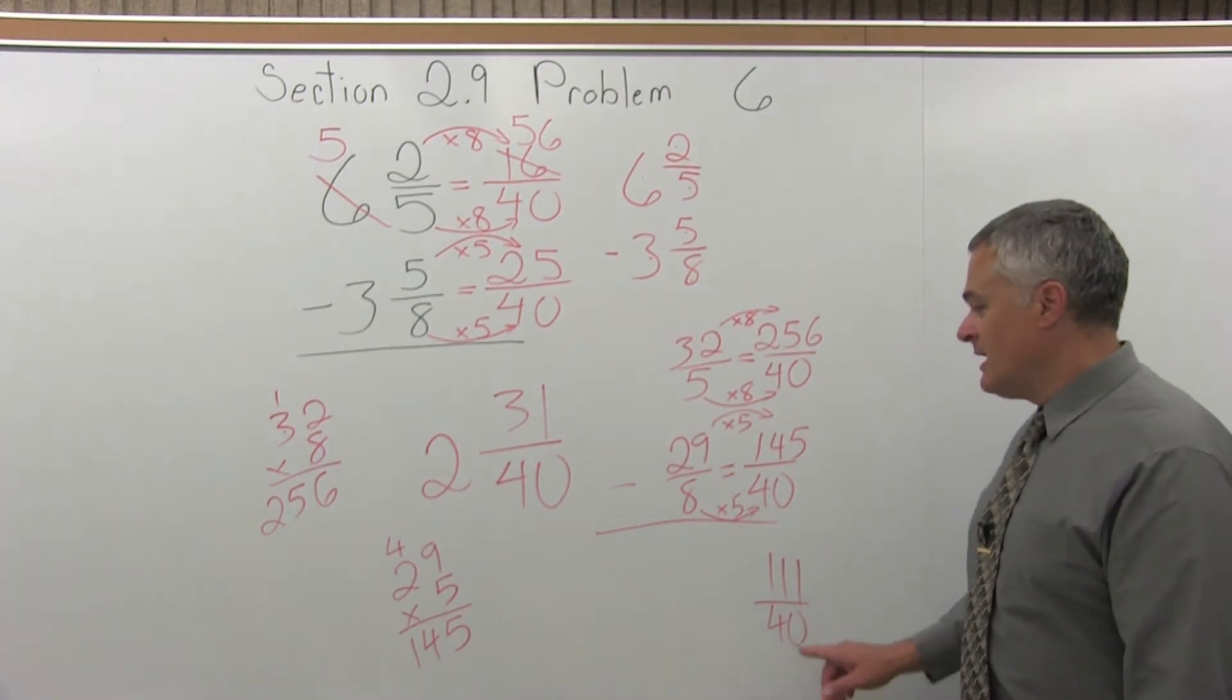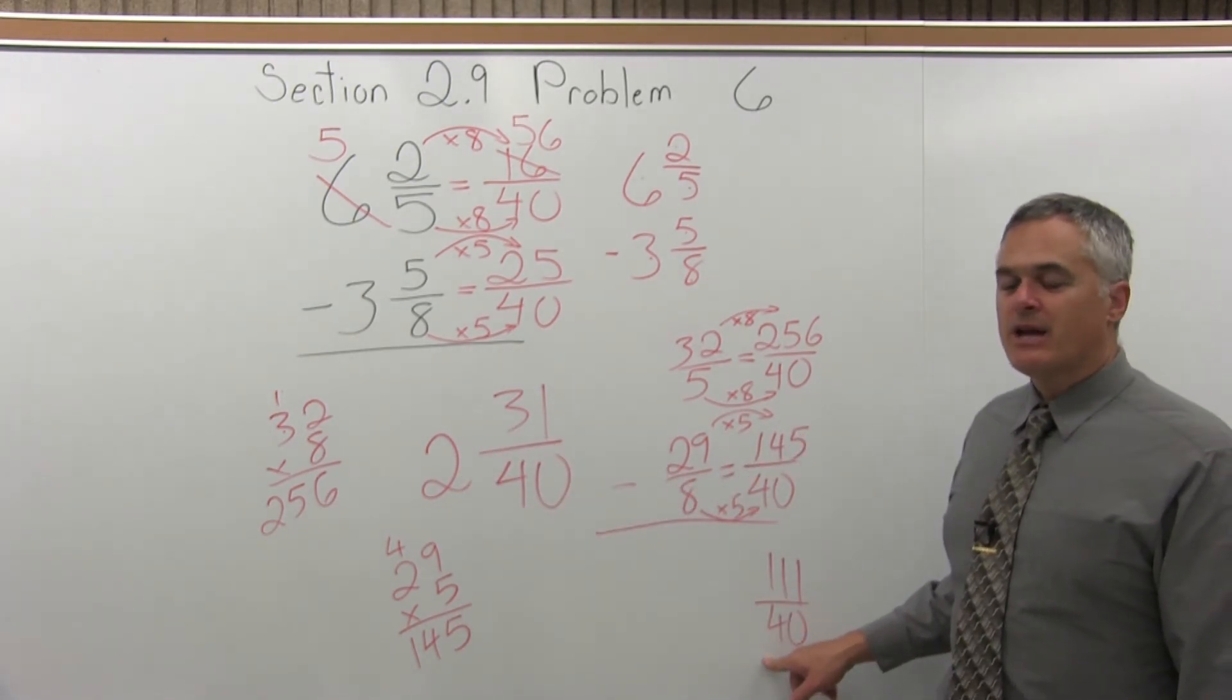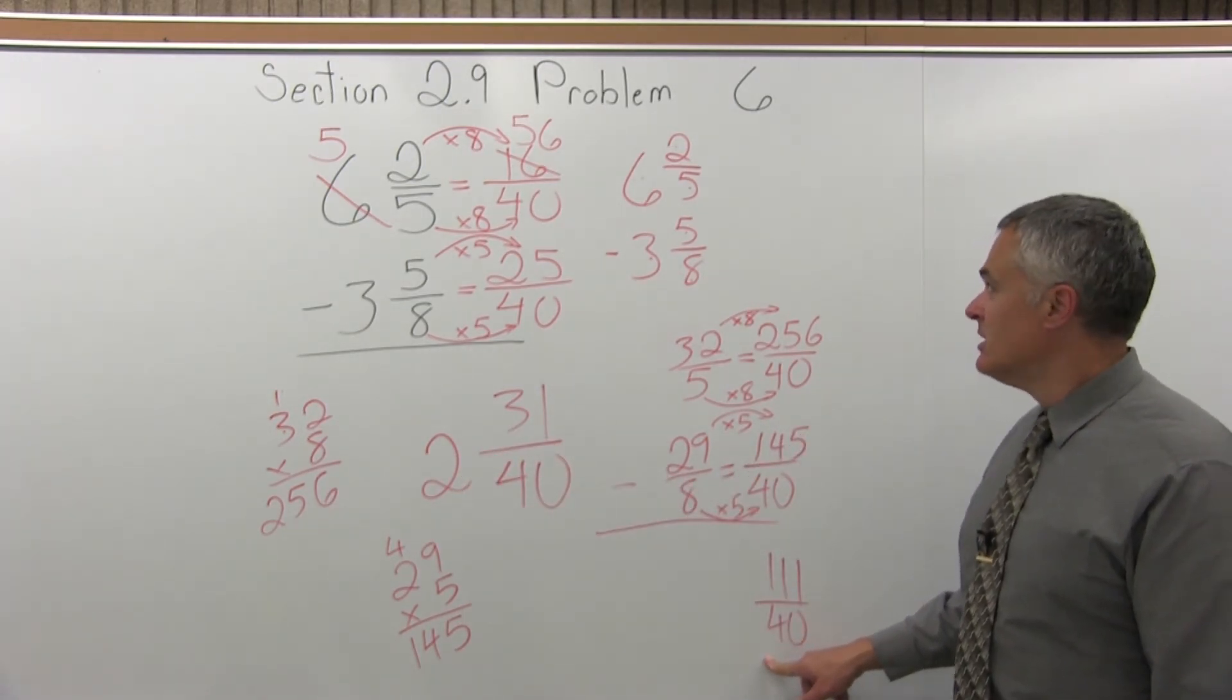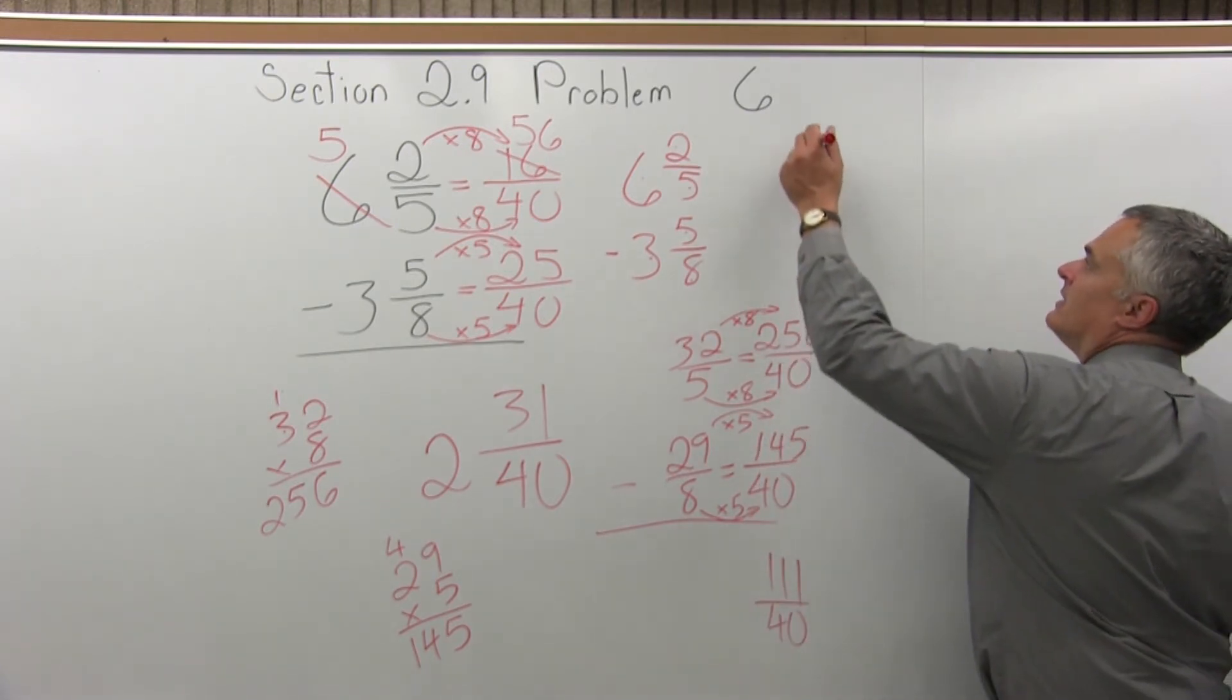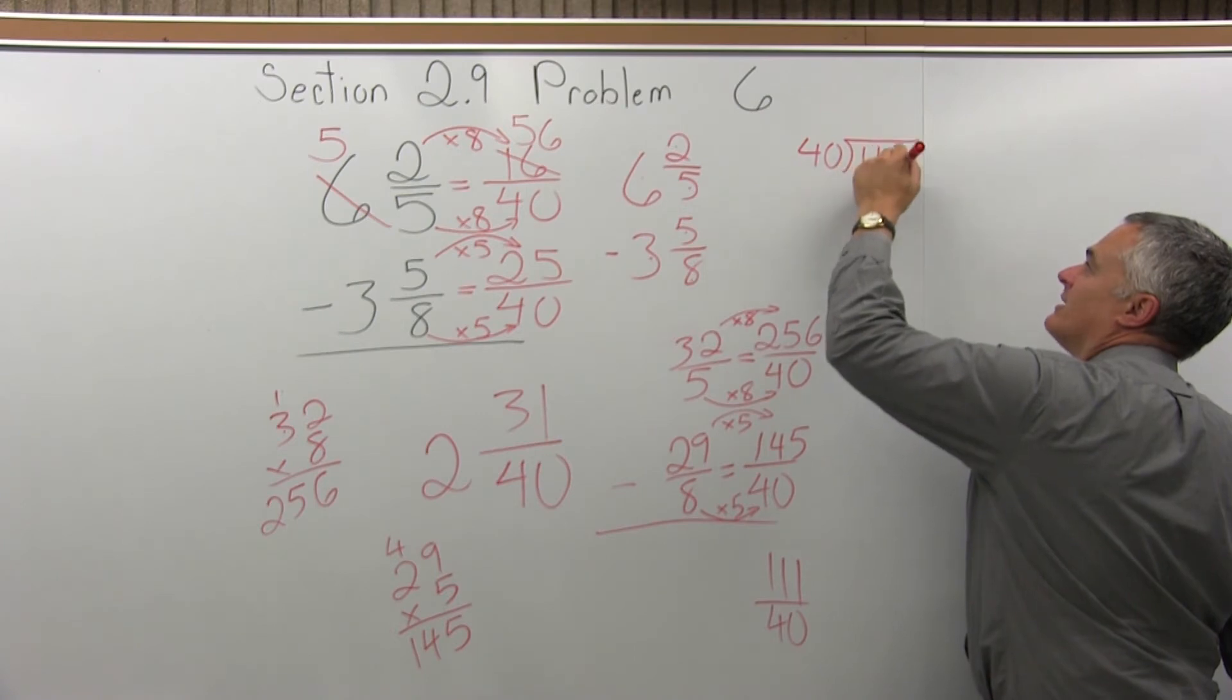Now that looks different than our previous answer, 2 and 31/40. Let's put that back to a mixed number. So the denominator of 40 divides into the numerator how many times?